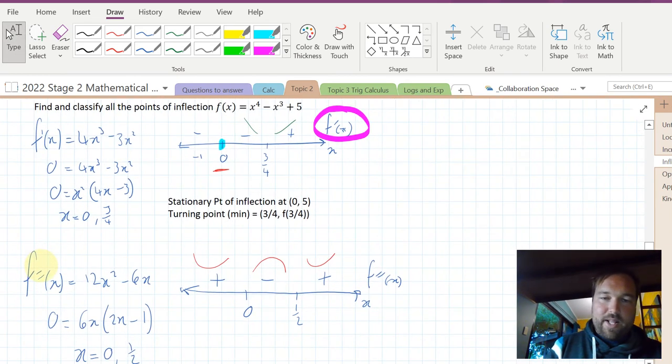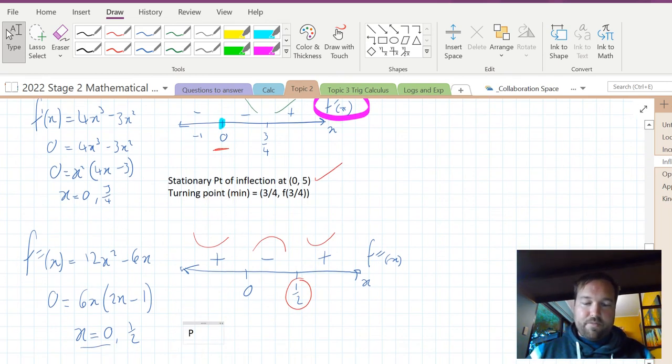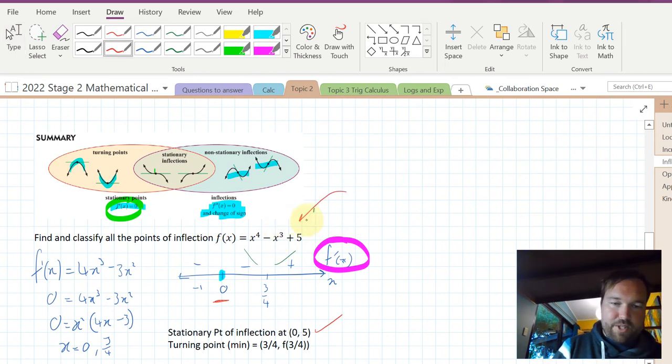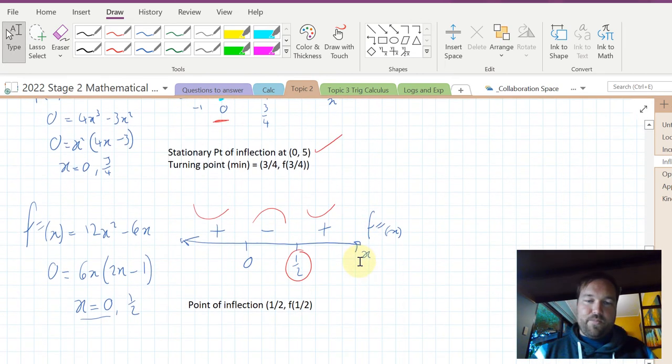We've already classified the stationary point of inflection, and this just confirms it. We don't have the half yet, so there is a point of inflection, non-stationary, at x equals a half and f(1/2). So we substitute the half into this original function here to find the y value.